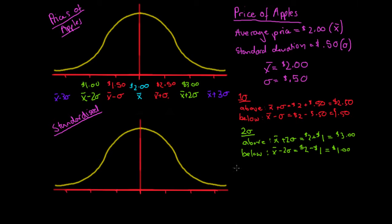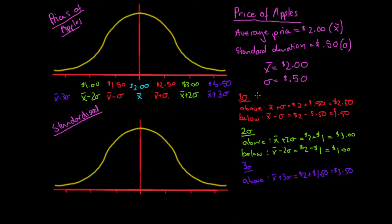Finally, three standard deviations. Three standard deviations above: x-bar plus 3·sigma = $2.00 + 3×$0.50 = $2.00 + $1.50 = $3.50. Three standard deviations below: x-bar minus 3·sigma = $2.00 − $1.50 = $0.50.